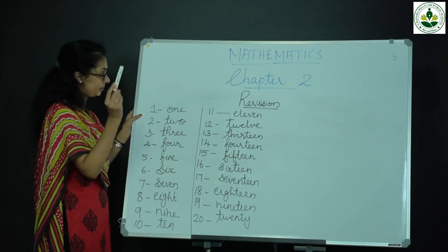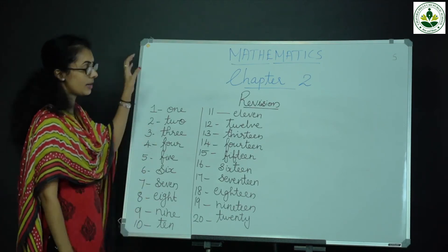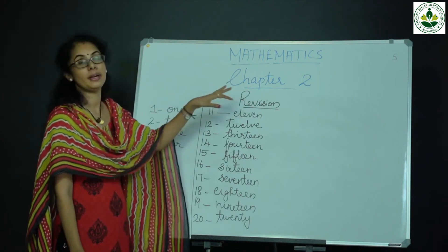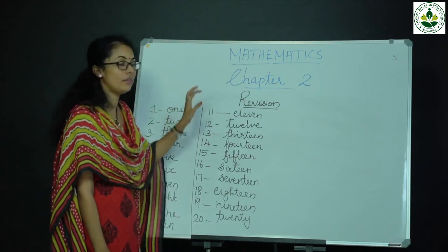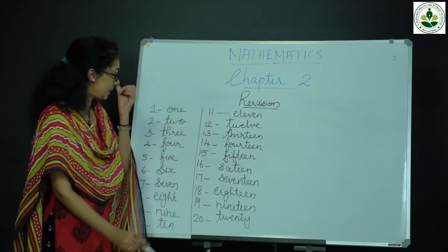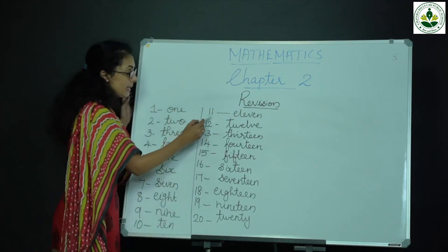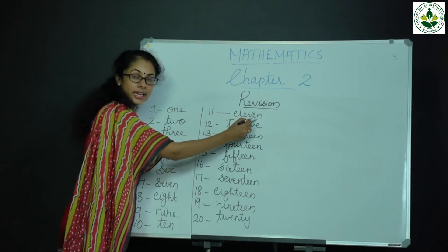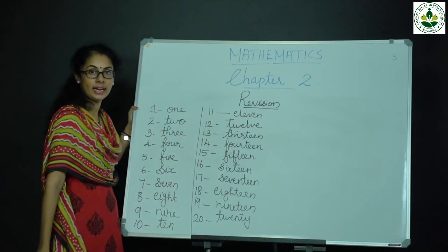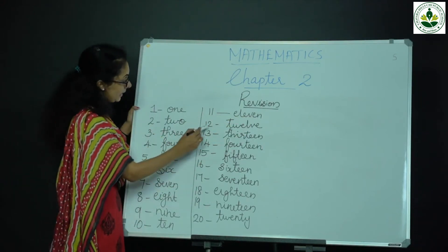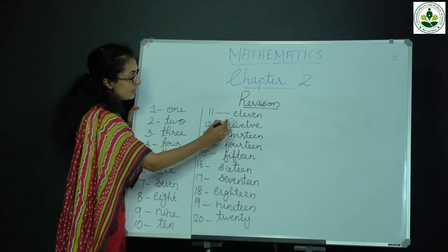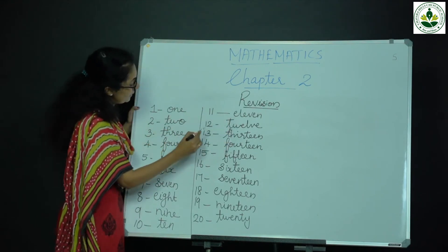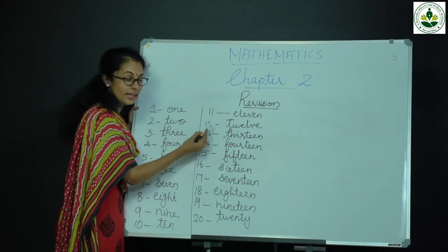Next one is number names from 11 to 20. First number is 11 — ELEVEN. Then 12 — TWELVE. Then 13 — THIRTEEN.